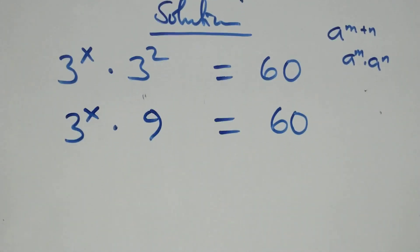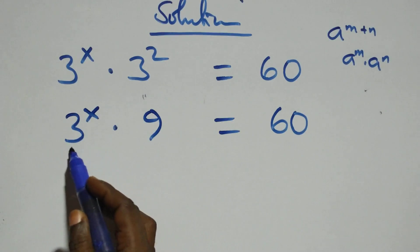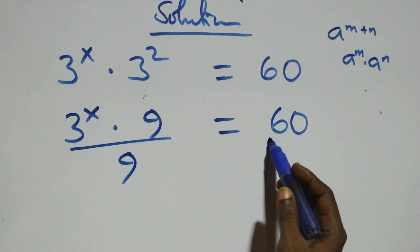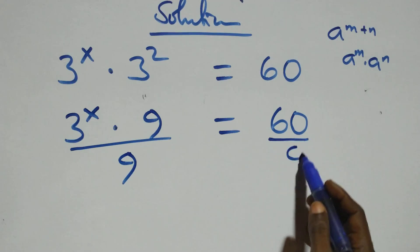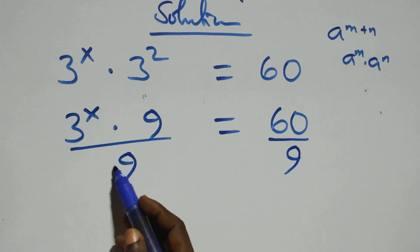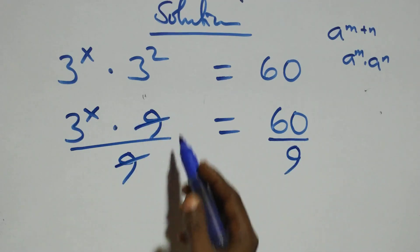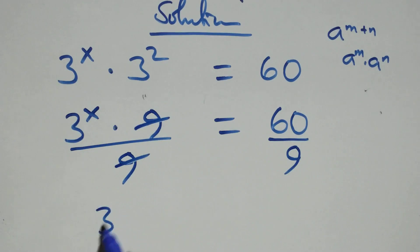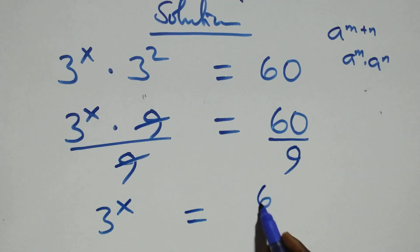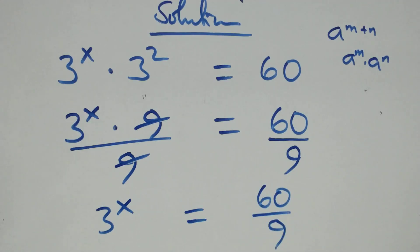The next step: we divide both sides by nine. This implies nine cancels, and we have three raised to the power x equals sixty over nine.